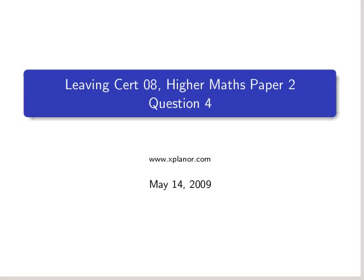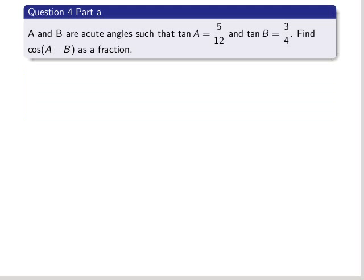Welcome back to explainer.com and the series on the Higher Maths Paper 2 questions from the Leaving Cert 2008. We're going to go through the solution of question 4 now, which is the trigonometrical solution. Part A, there's no diagram. We're just told that A and B are acute angles such that tan A equals 5 over 12 and tan B equals 3 over 4.